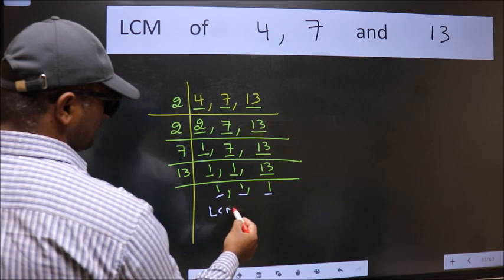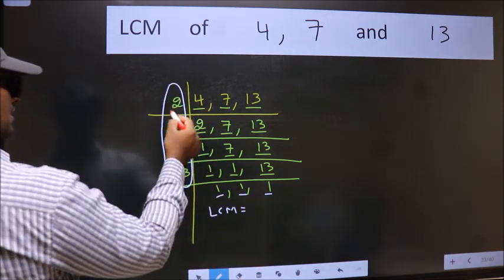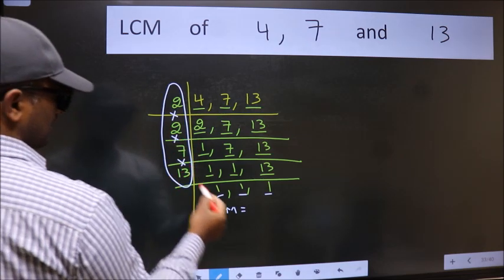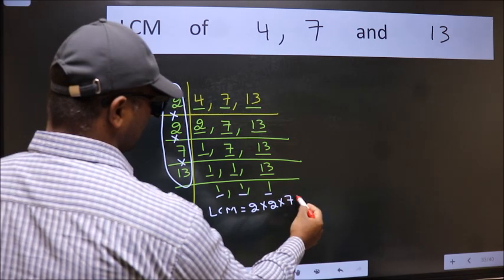So our LCM is the product of these numbers: 2 times 2 times 7 times 13.